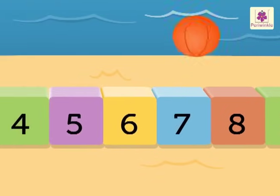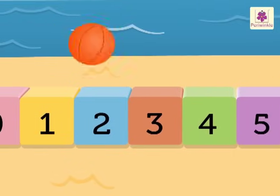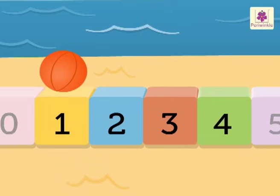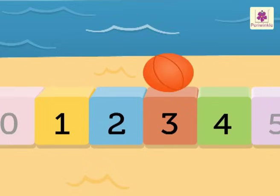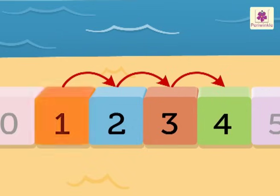Now look at the ball. It is on number 1. Now let's see which three numbers come after 1. They are 2, 3, 4. The numbers that come after are always greater than the given number.